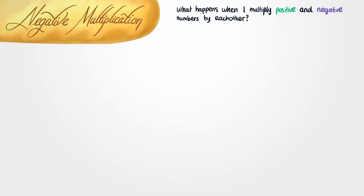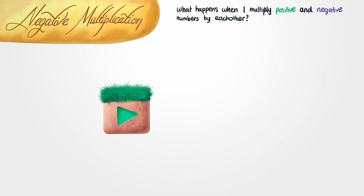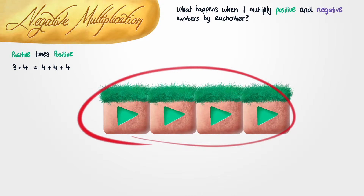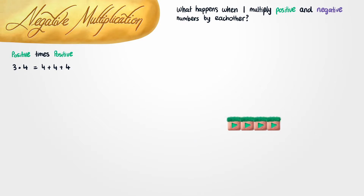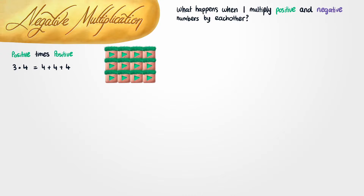I'm going to start by drawing a picture of a block. To indicate that this is a positive block, I'm going to draw an arrow that points to the right. I'd like to investigate multiplying 3 and 4. The whole point of multiplication is to add things together very quickly. So when I say 3 times 4, I really mean I'd like to add 4 to itself 3 times. Let me start by making 4 copies of this block. Now that we have 4 blocks, 3 times 4 means we want to add this group of 4 blocks to itself 3 times. We have 3 groups of 4 blocks, and that makes 12 blocks.